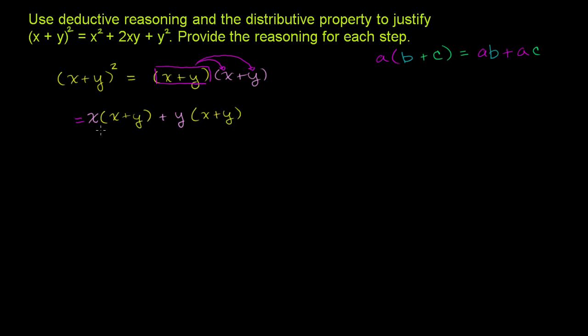And now we can apply the distributive property again. We have x being multiplied by (x + y). And then we have a y being multiplied by (x + y). So let's just do that again. So then we get this is equal to x times x plus x times y, plus y times x plus y times y.